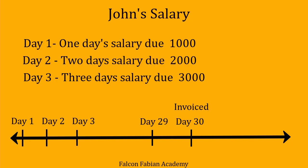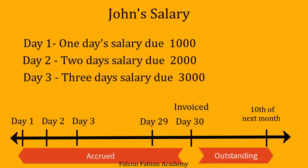When John works for 30 days, the invoice is raised at the end of 30 days. Suppose the salary is not paid till the 10th of next month. For those 10 days — when the salary was due, the invoice was raised, and it was not paid — it is going to be termed as an outstanding expense. So an expense is termed accrued when the invoice has not yet been raised. From day 1 to day 29, the business is liable but no invoice exists, so it is accrued. The moment an invoice is raised and it is still not paid, it becomes an outstanding expense.